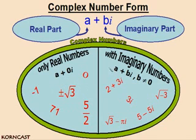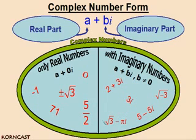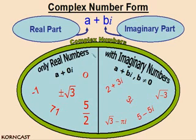The other part of that are the complex numbers that have imaginary numbers. For example, a plus bi where b is not equal to 0. Examples include 2 plus 3i, 3i, ones like square root 3 minus pi·i, and square root of negative 3 — which we know ends up being square root of 3 times i — and 5 minus 5i. Together, real numbers and numbers with imaginary parts both make up all of the complex numbers.